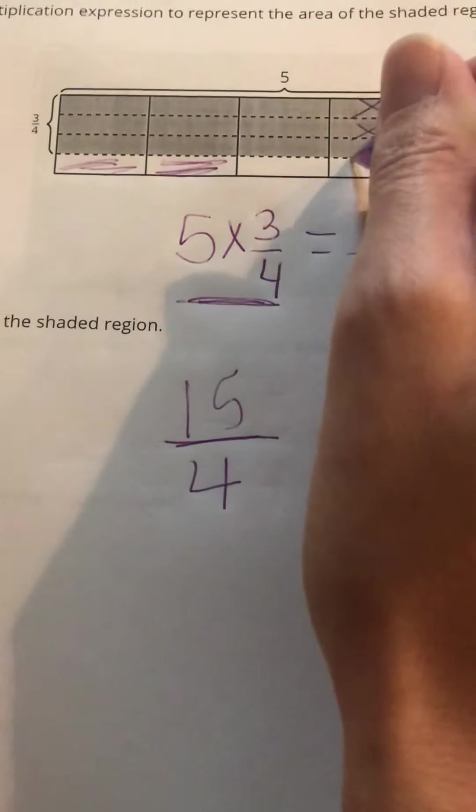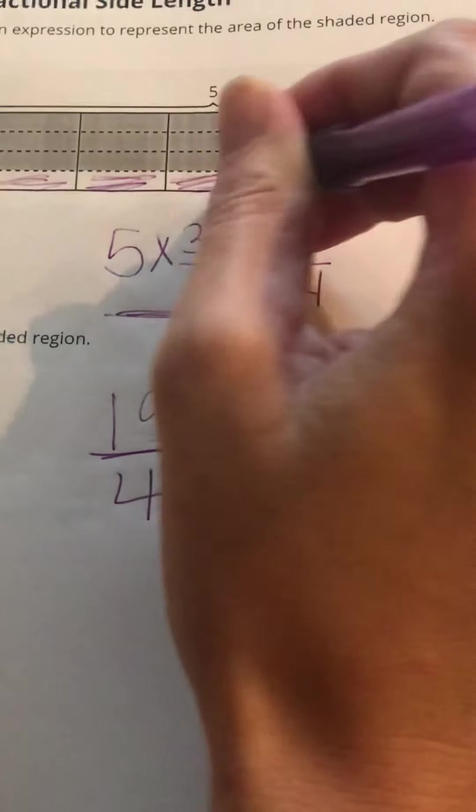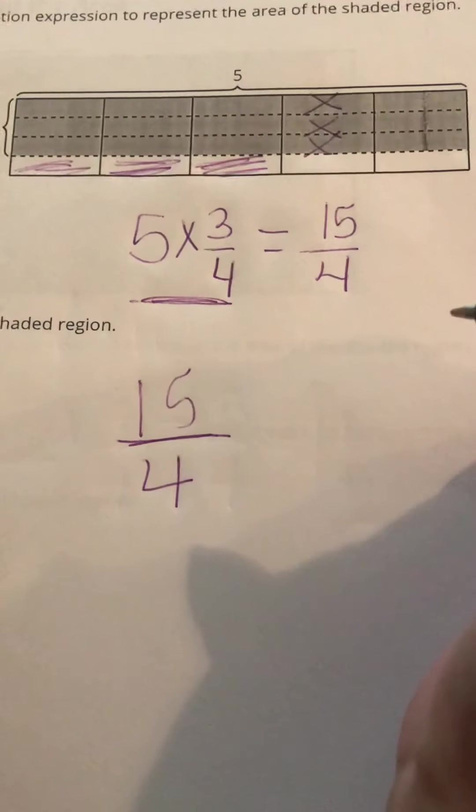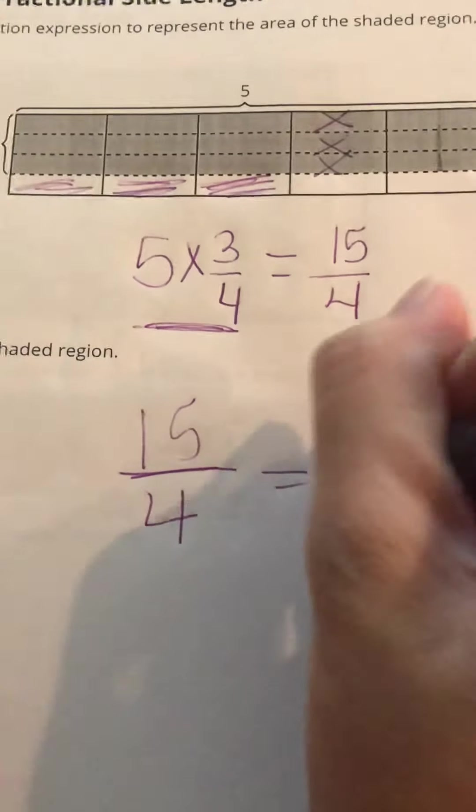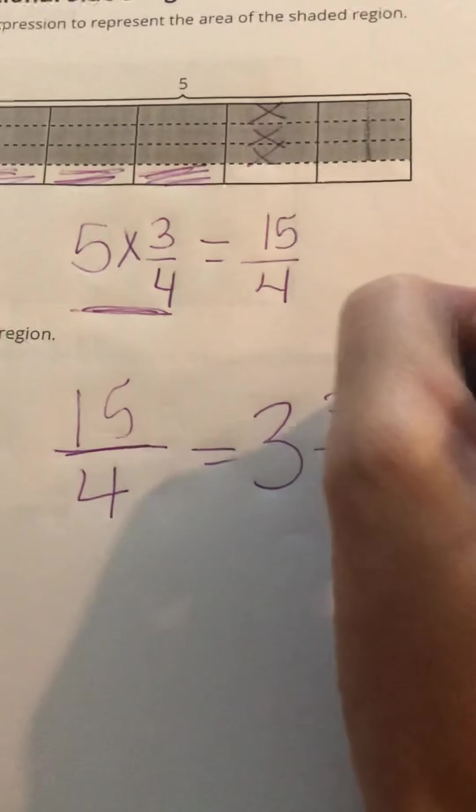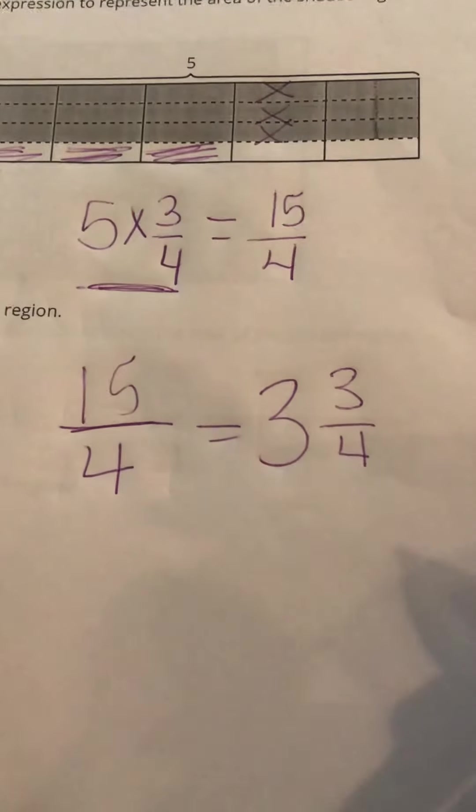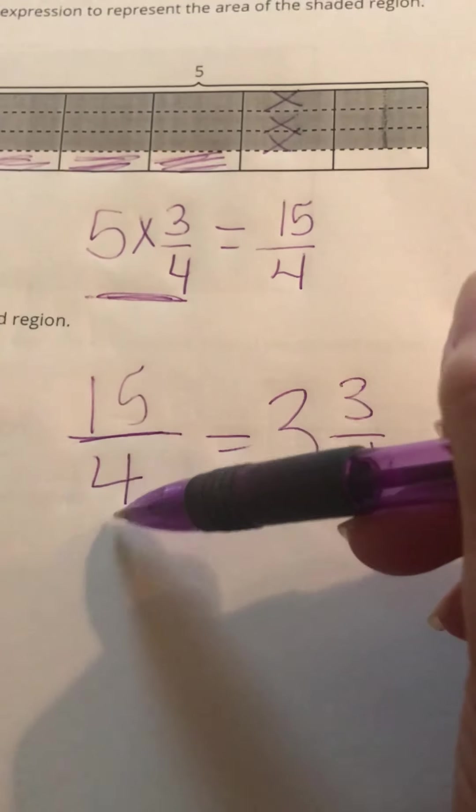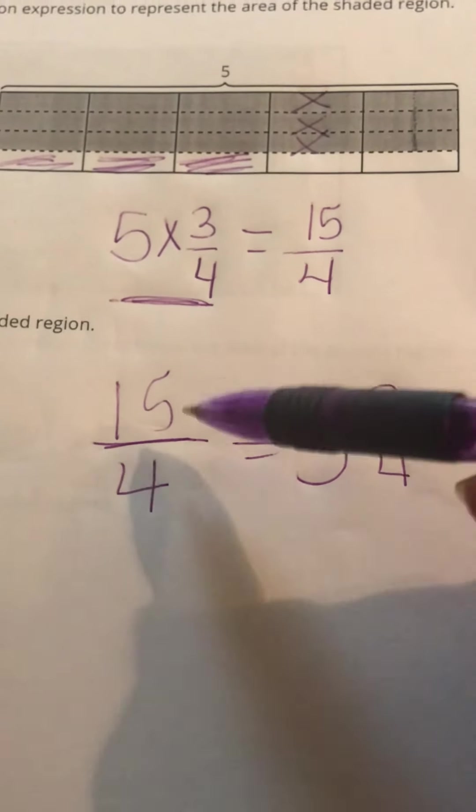And then now I've got 3 completely filled in and then I've got 3/4 left over. So 3 and 3/4. You could also think about how many fourths I can make with 15, and I can make 3 of those.